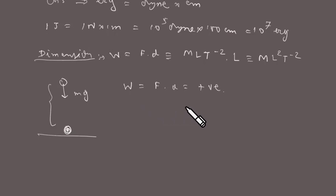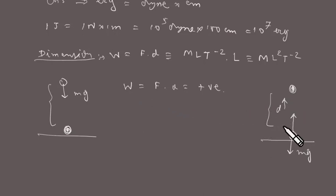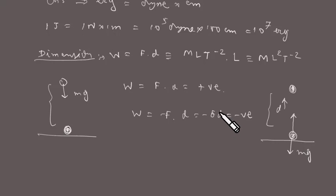If a stone is thrown upward, it has displacement in the upward direction, but the gravitational force acts downward — they are in opposite directions. If F is positive then d is negative, so W = -Fd. This means the work is negative. When force and displacement are in opposite directions, the work is said to be negative, or the work is done against the force.